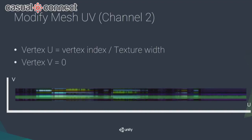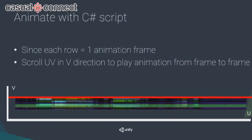We also need a way to read this back. We can modify UV channel 2: the U value of your vertex is the vertex index divided by the texture width, and the V value starts at 0. We can then read back the animation frame by scrolling in the V direction.